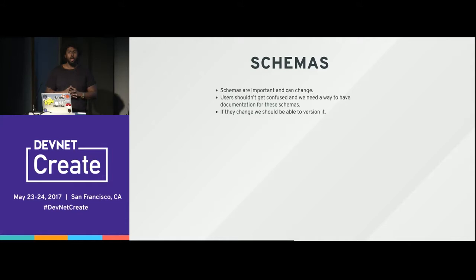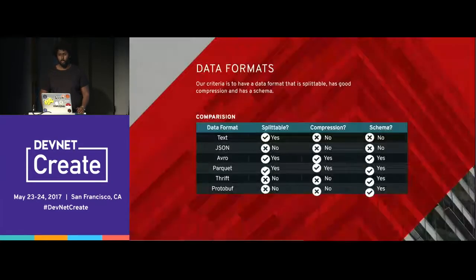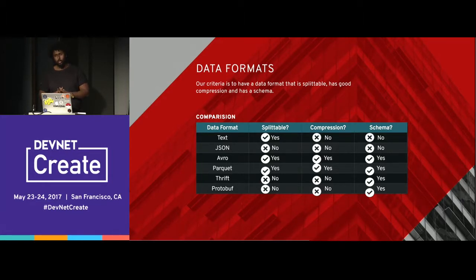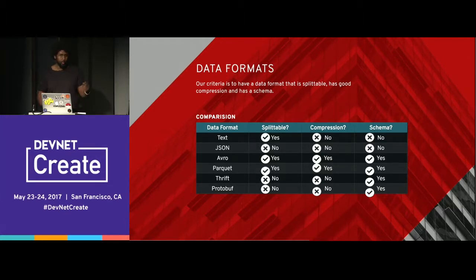Schemas are important. Data can change — fields can be added, applications can support different features, and schemas will change over time. Common formats include text and JSON, which are very common. Avro and Parquet are better because when storing in HDFS or a distributed file system, you want splittable data, good compression, and a schema — Avro and Parquet check all those boxes. Thrift and Protocol Buffers have schemas but are not as rich as Avro and Parquet. Both Avro and Parquet are Apache projects.